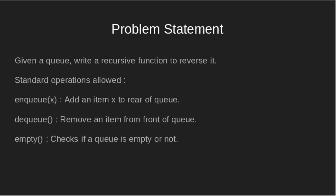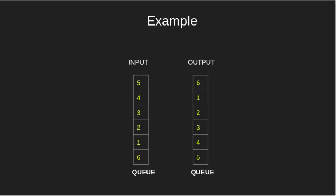Standard operations allowed are: NQX — add an item X to the rear of the queue; TQ — remove an item from the front of the queue; and Empty — checks if a queue is empty or not.